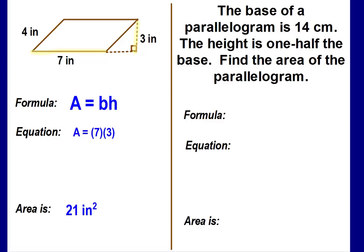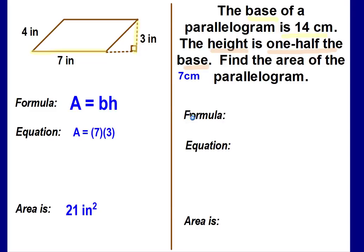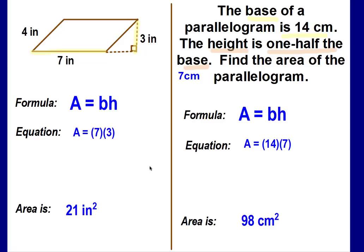The base of a parallelogram is 14 centimeters. The height is one-half the base. Half of 14 is 7, so the height is 7 centimeters. Formula: area equals base times height. Plug in the numbers — base is 14, height is 7, so 14 times 7. The area is 98 centimeters squared.